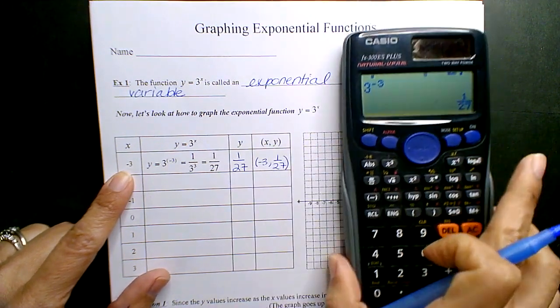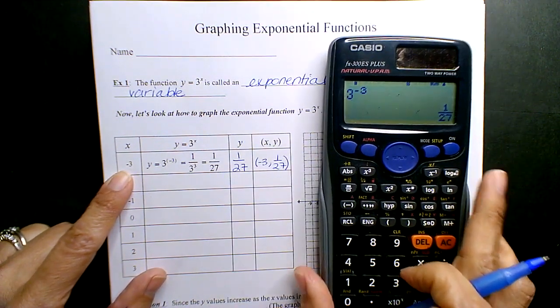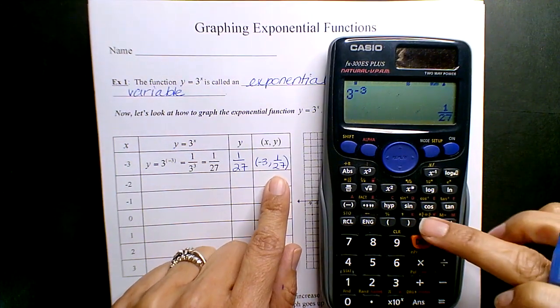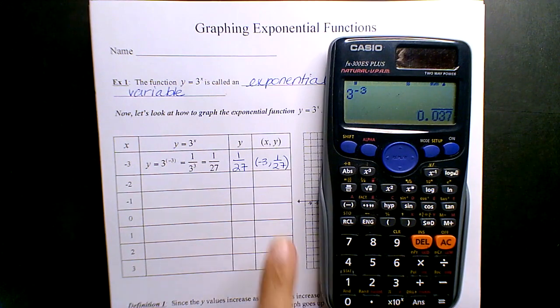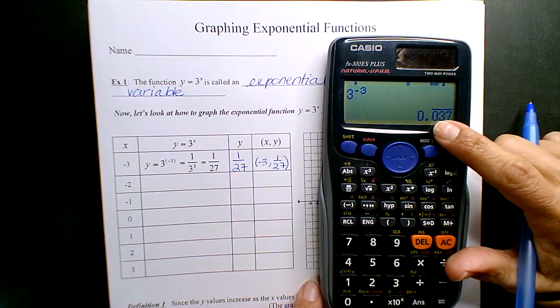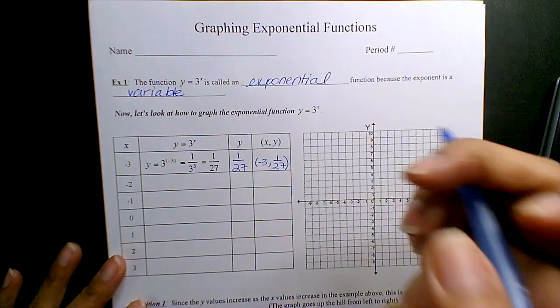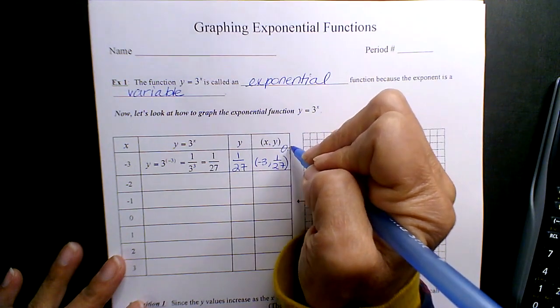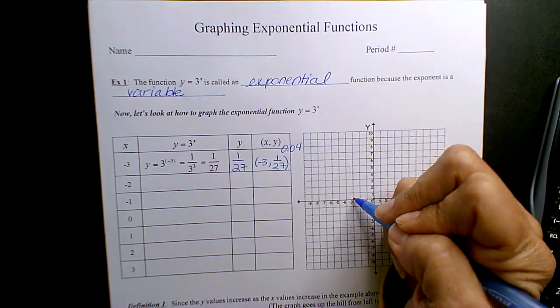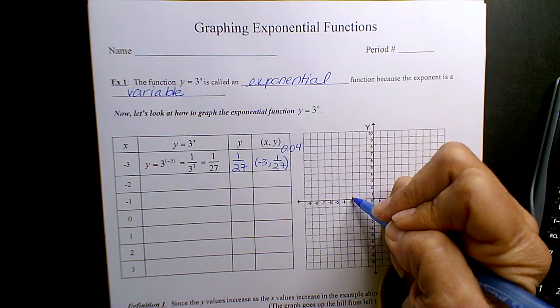Since you have to eventually plot these, even though the fraction is acceptable, you can go ahead and hit the decimal because 1 over 27th - how many of us actually know where that number is on the number line? So 0.04.